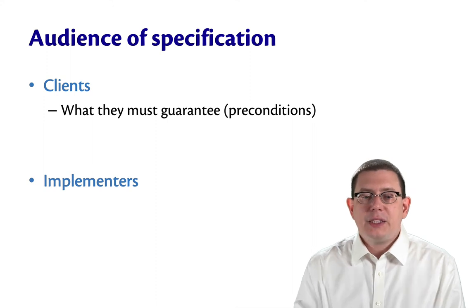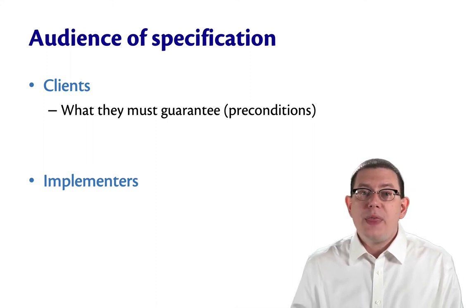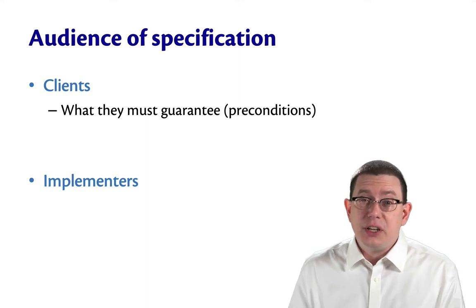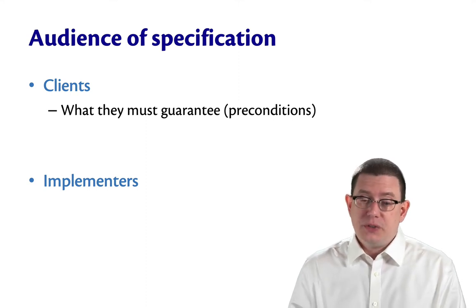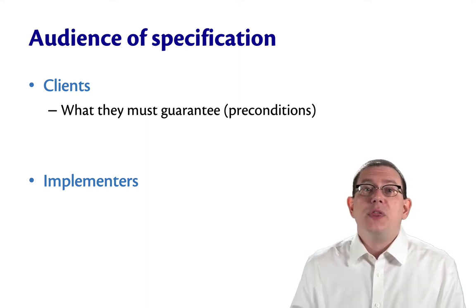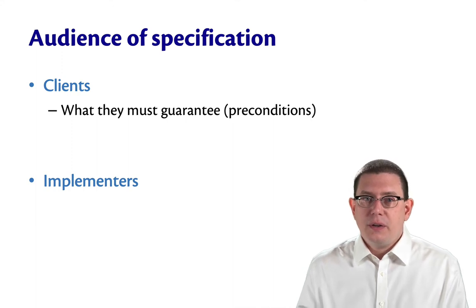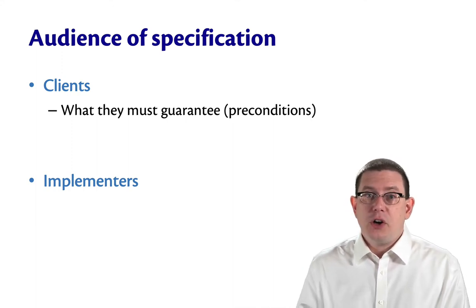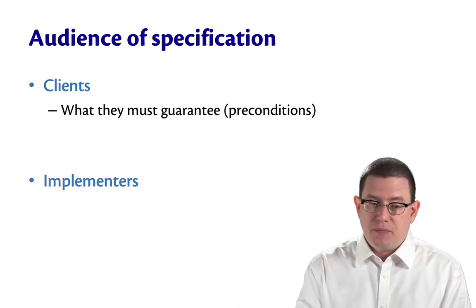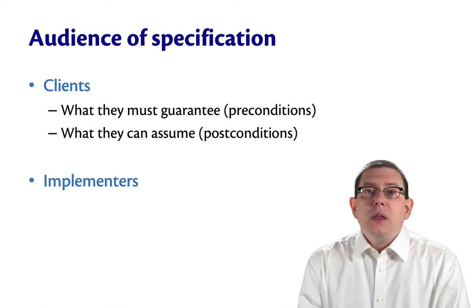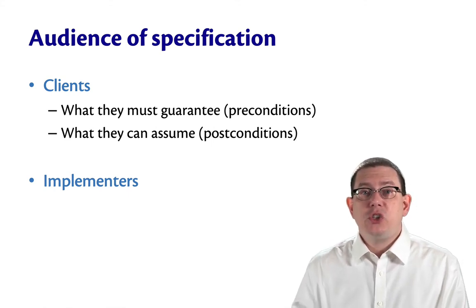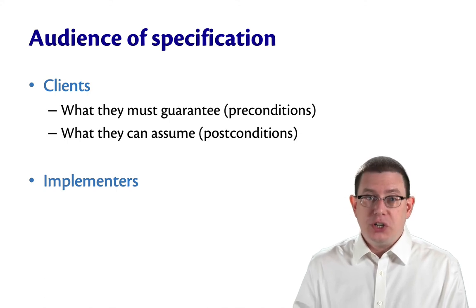To a client, a specification tells them what they must guarantee — particularly in terms of functions, that is, what the preconditions are. A client must arrange such that when they call a function, they have satisfied the precondition for that function. The specification for a function also tells the client what they can assume as a postcondition.